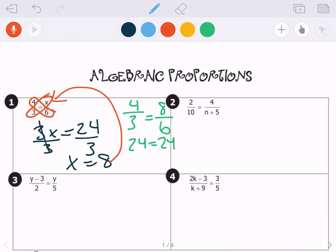Now we're going to move on to a little bit harder problem. So we're going to cross-multiply again. So when I'm looking at the 2 times the n plus 5, I want you to write it as the 2, and then in parentheses we're going to put the n plus 5, because we need to multiply the 2 by the n and the 2 by the 5. And then we have 10 times 4, which is 40.